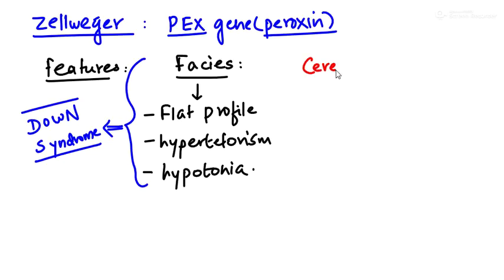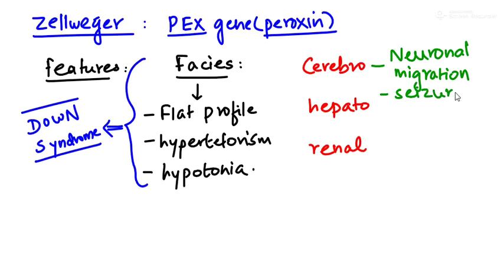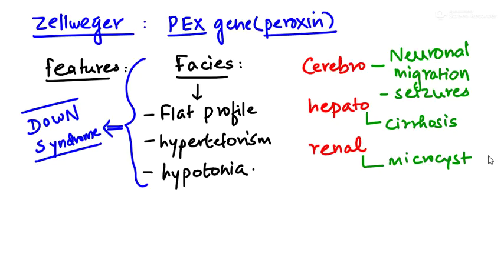The other name of Zellweger syndrome is cerebro-hepatorenal syndrome, which helps remember its features. Cerebral manifestations include neuronal migration disorders and seizures, which are very common in the newborn period. Hepatic symptoms include cirrhosis of the liver. Renal features include microcysts inside the renal tubules and renal parenchyma, as well as renal calculi.